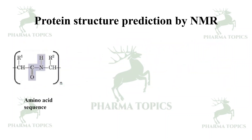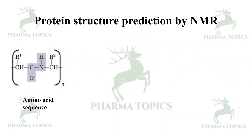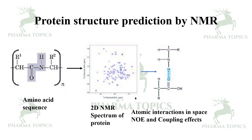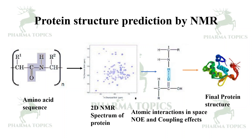The workflow appears as follows: you start with the amino acid sequence, then you perform NMR to identify the 2D NMR spectrum of the protein. The next step is to study the amino acid interactions in space by the Nuclear Overhauser Effect and coupling effects. Then the final protein structure can be predicted by NMR.